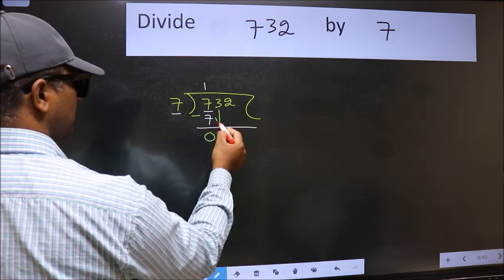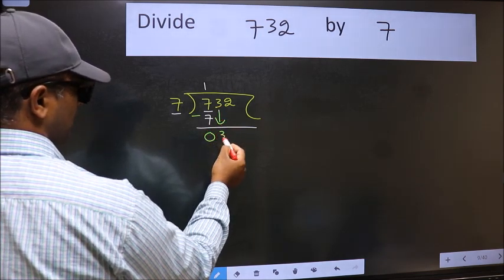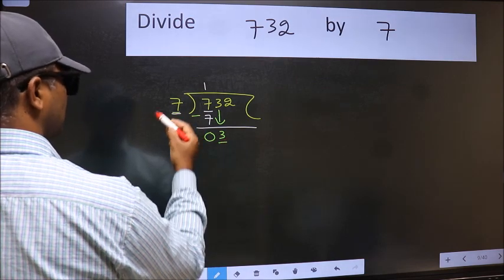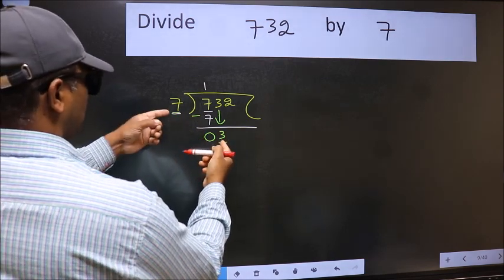After this, bring down the beside number. So 3 down. Now here we have 3 and here 7. 3 is smaller than 7.